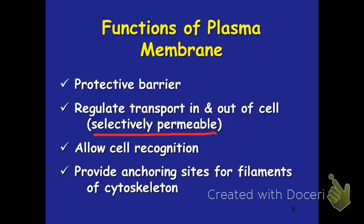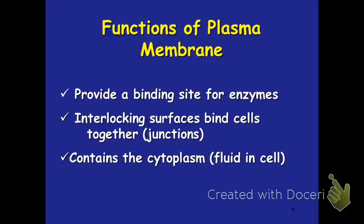The cell membrane also has properties that allow for cell-to-cell recognition within the body. It provides anchoring sites for parts of the cytoskeleton — our microtubules, microfilaments, and intermediate fibers that can attach to the cell membrane and provide support and structure. It also provides a binding site for enzymes that do important jobs, and it provides interlocking services so that our cells can stick together. In animals, our cells make up tissues, tissues make up organs, organs make up organ systems, and organ systems make up the organism.